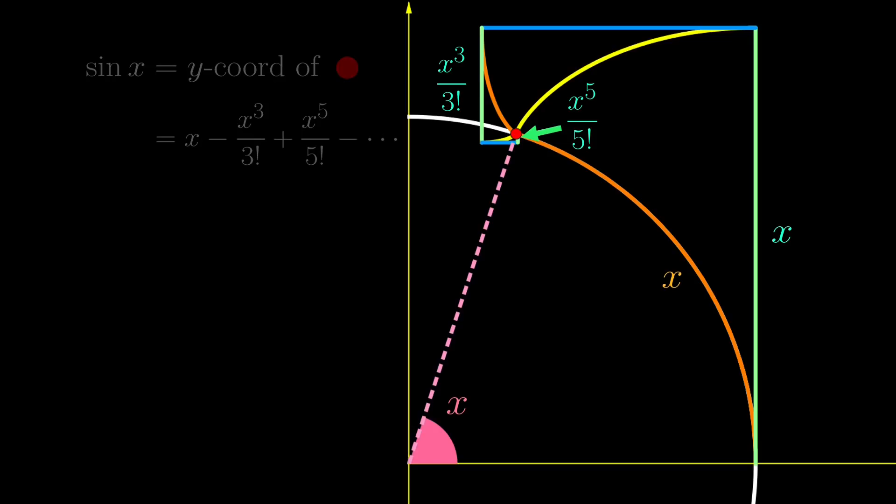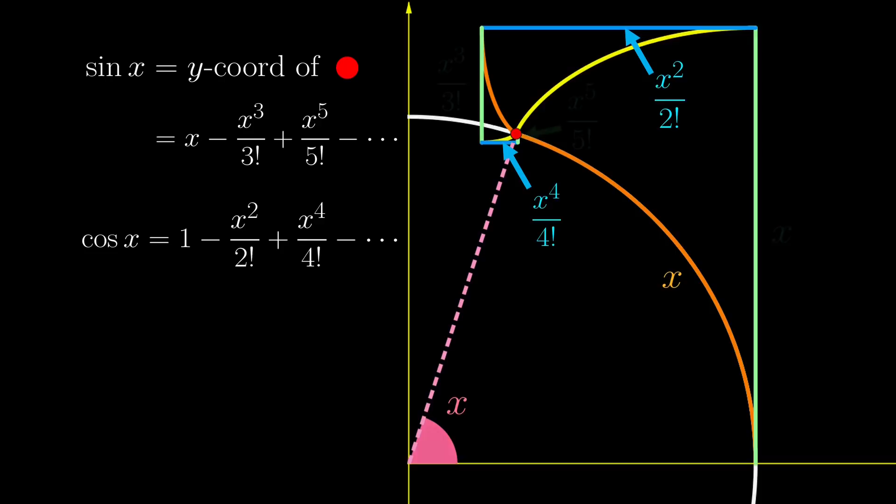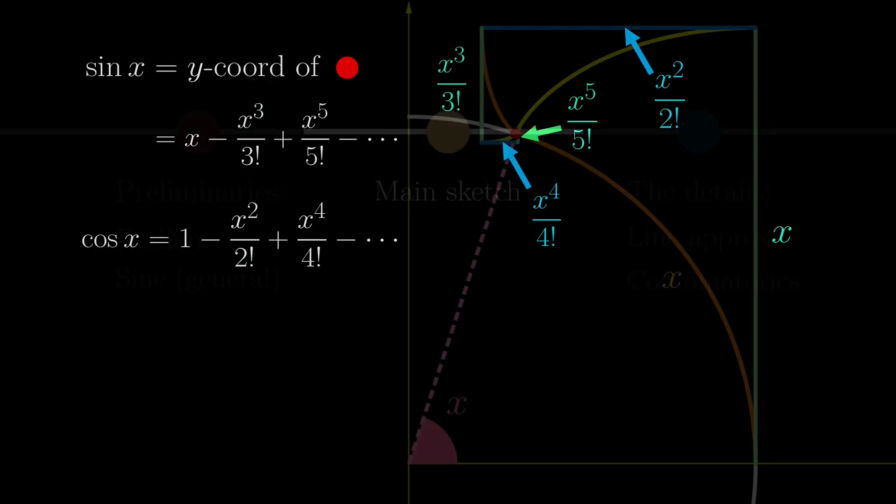In fact, exactly the same diagram tells you the power series for cosine, just that we use the horizontal segments instead. This is a very beautiful demonstration, but now comes the question, why are these lengths x to the n over n factorial in the first place?